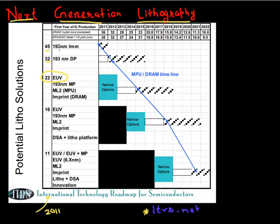We noticed that at 45 and 32 nanometers we got around by using 193nm immersion lithography, then we switched to double patterning. Going forward, the roadmap says you need EUV — it's a constant in all future nodes. But what if it doesn't happen? It lists out multiple options, and I want to describe in this video what these other options are.